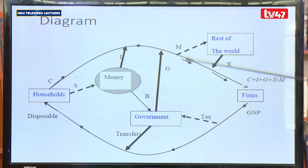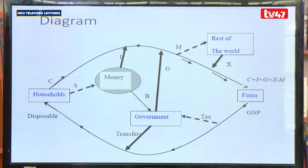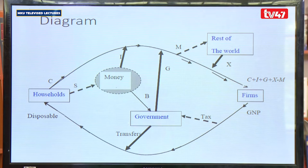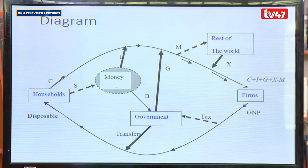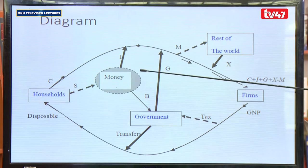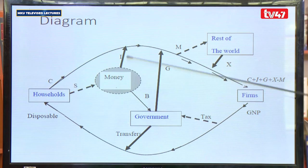The same way happens with the government. The government gives transfers — money which the government gives to its citizens — like food relief or old age payments given in the form of money. The government gives out transfers which become the income of the household. The same household uses that money by investing in the money market or in banks, from which the government borrows.